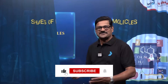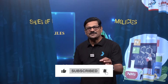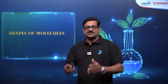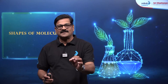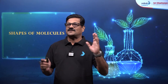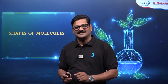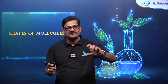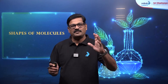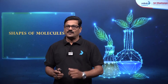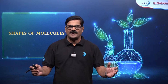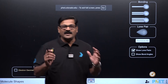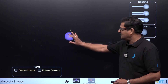Hi students preparing for your NEET examination. In this session we are going to talk about the shape of molecules with animations. The shape of a molecule is decided by the number of electron pairs present on the central atom and hybridization — specifically the number of bonded atoms, bond pairs of electrons, and lone pairs of electrons.